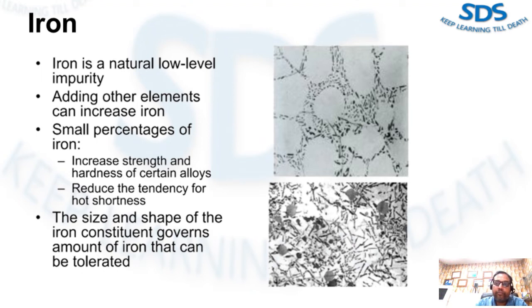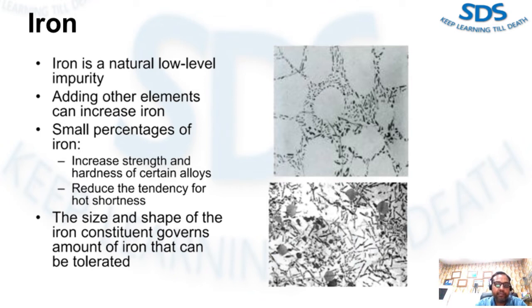Alloys 518 and 443 have less than 0.8% iron. These alloys contain 8% magnesium and 5% silicon respectively and have a greater tendency to solder to the die if iron is not kept above 1%. Iron forms compounds with chromium and magnesium; if not controlled, this will cause hard spots and poor machinability. The melting point of iron is 2,300°F. The solubility of iron in aluminum is 2% at 1,211°F.